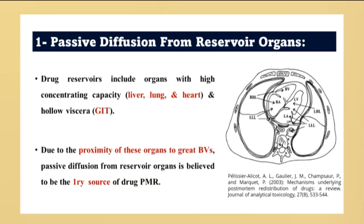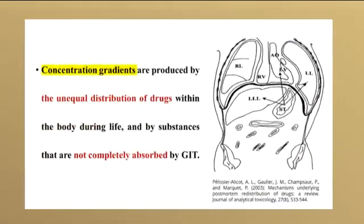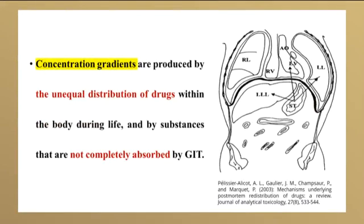Due to the close proximity of these organs to the great vessels, passive diffusion from reservoir organs is believed to be the primary source of drug post-mortem redistribution. Concentration gradients are produced by the unequal distribution of drugs within the body during life and by substances not completely absorbed by the GIT.